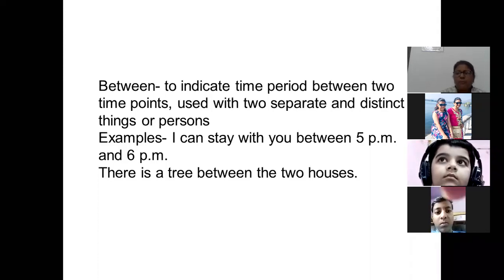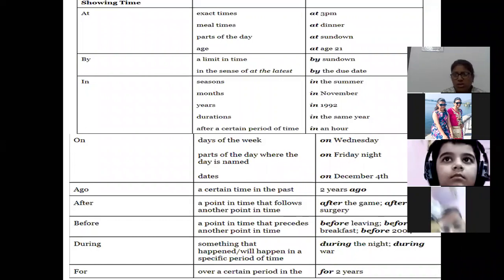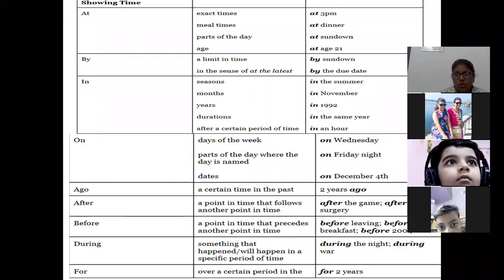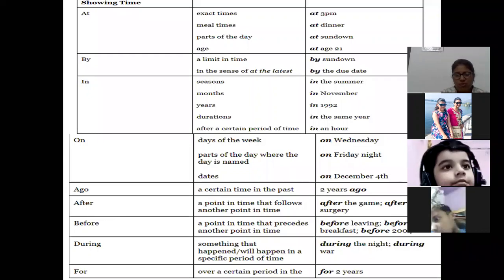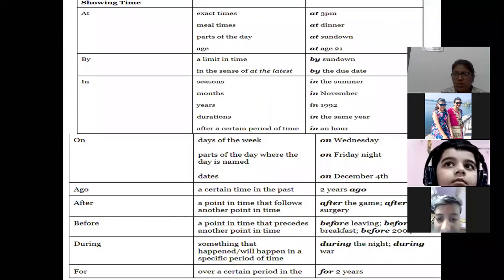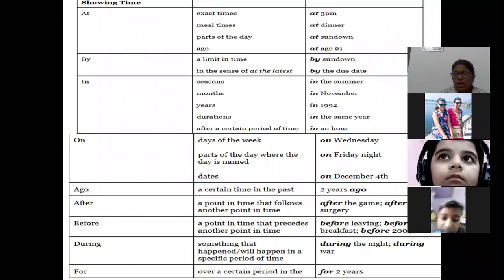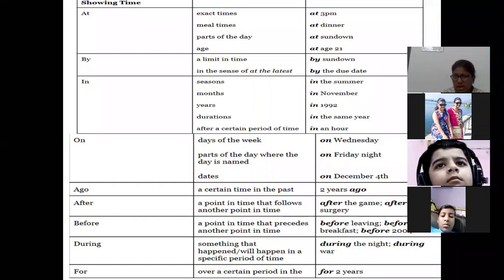Now let's look at different uses for showing time. 'At' is used for exact time: I will go to my friend's house at 3 pm. It is also used for meal times: at dinner, at lunch, at breakfast. And for age: at age 21. 'By' is used to show a limit in time: by sundown, or in the sense of 'at the latest': by the due date.